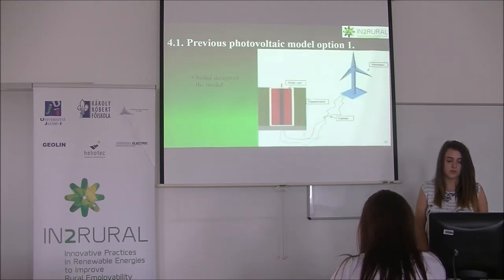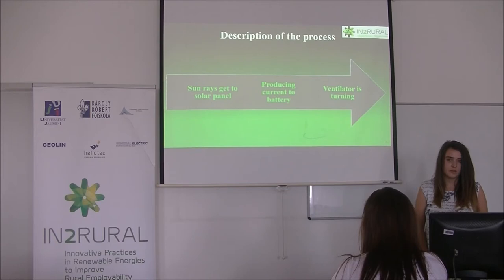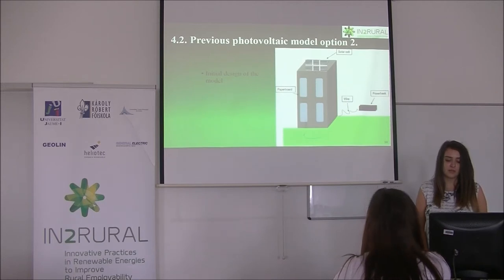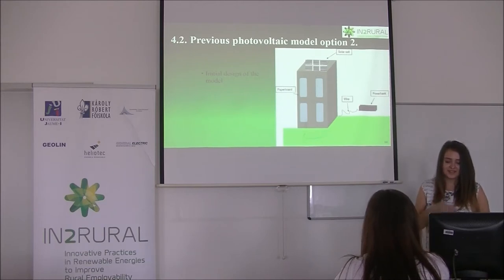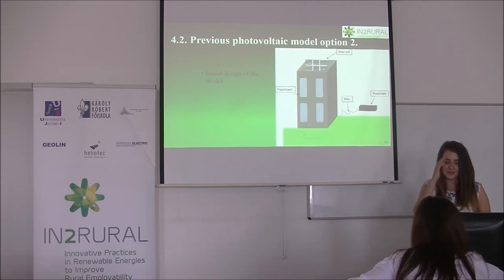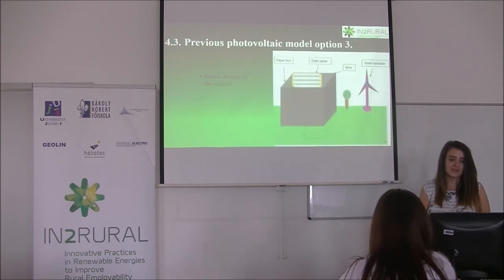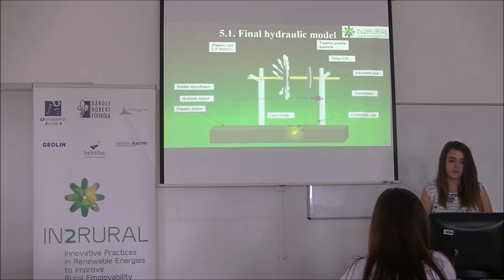The first photovoltaic model preview is made from a solar cell, paper bolt, cables, and a ventilator. The photovoltaic model description of the process: when sun rays reach the solar panel, it produces current to a battery, and the ventilator runs. The second photovoltaic model preview is made from paperboard, simulating a house. The third photovoltaic model preview is made from a paper box, solar panel, wire, and a small ventilator.